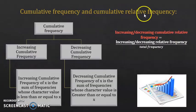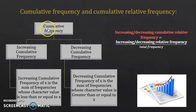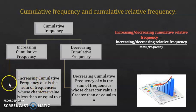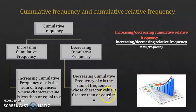Now, relative frequency and cumulative relative frequency. Let's start with cumulative frequency. There are two types: increasing cumulative frequency and decreasing cumulative frequency. The increasing cumulative frequency of a value x is the sum of frequencies whose character value is less than or equal to x. The decreasing cumulative frequency of x is the sum of frequencies whose character value is greater than or equal to x.